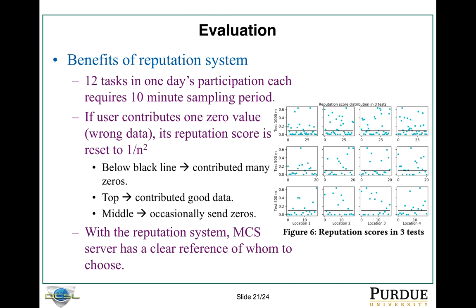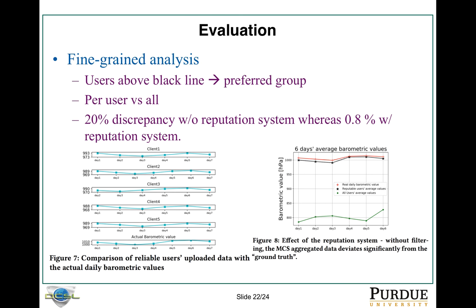Let's see how the benefit of the reputation system works. We extracted data from 12 tasks in one day's participation, where each task requires a 10-minute sampling period — basically every 10 minutes gives us barometer data. We see 12 plots here. The black horizontal line is the average reputation score, calculated as 1 divided by m. People below the black line contribute many zeros. Those who stay at the top always contribute good data. Those in the middle occasionally send zero data. Looking at this plot, we can have a very good reference on whom to choose and whom to avoid.